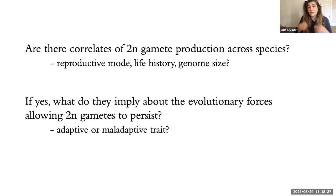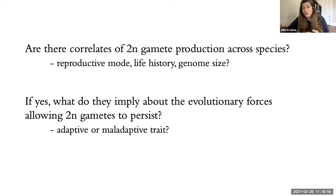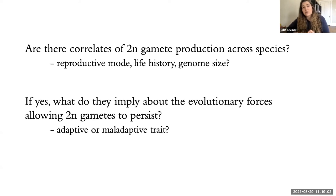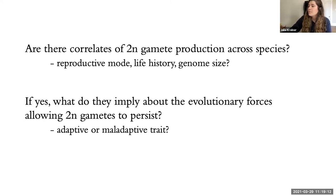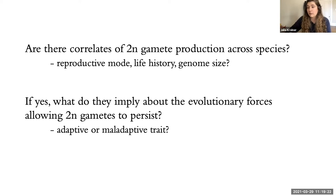Now with a better understanding of frequency, we wanted to really test those hypotheses about correlates of unreduced gametes — specifically reproductive mode, life history, and genome size. We weren't able to do ploidy level itself because we would have needed chromosome squashes. So those were the three traits we tested. If we did see correlates, we could make some inferences about what that implies for the evolutionary forces maintaining 2N gametes.